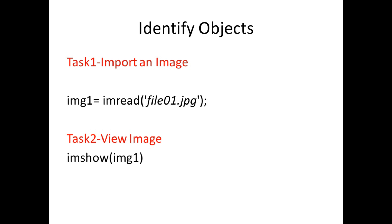Hi everyone, in this section I will discuss how we identify objects. To do that, we import an image using the imread command, where the left-hand variable would be img1. The imshow command is used to display those images. Once we load the image using imread, the image file 01.jpeg has been loaded to img1 and we display it using imshow.